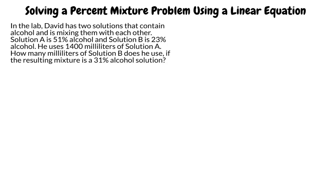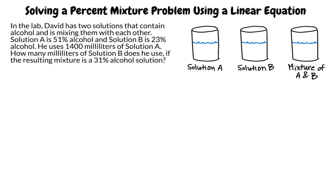Let's start by writing out the knowns and unknowns. For solution A, we know that the solution is 51% alcohol and the volume is 1400 milliliters. For solution B, we know that the solution is 23% alcohol, but we were not given the volume. For the resulting mixture, the percent alcohol is 31%, but we do not know the volume. We are asked to find the volume of solution B, so we will use the variable x to represent this quantity.